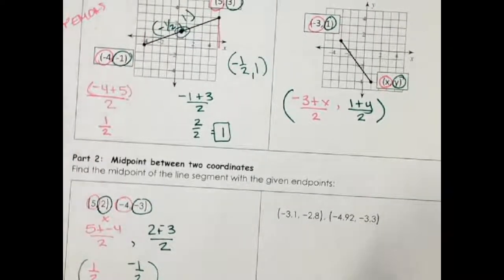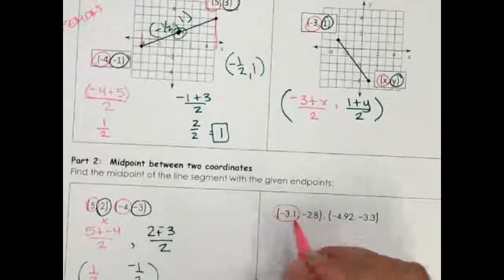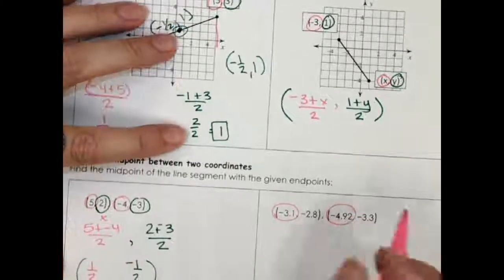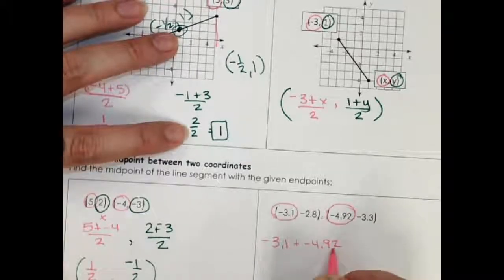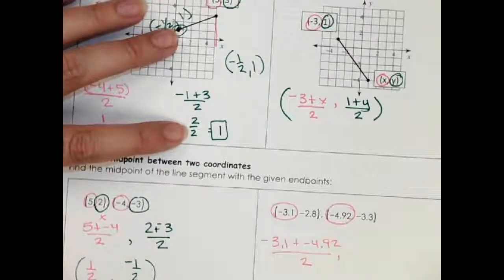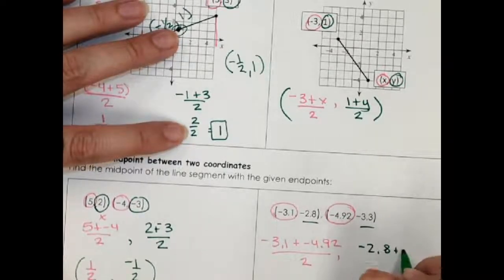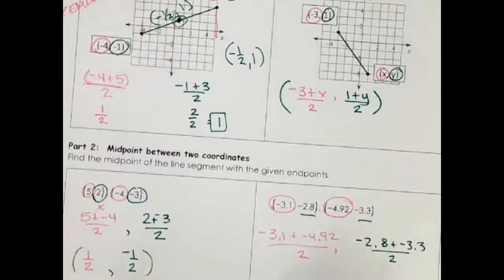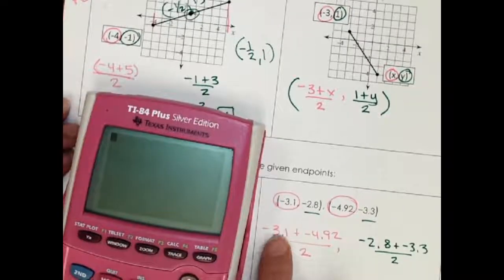Next one, now they put some decimals in so we're probably going to grab our calculators, but we just do it the same way. Here's the x's: negative 3.1 plus negative 4.92 over two. Here's the y's: negative 2.8 plus negative 3.3 over two. I'm going to grab my calculator.